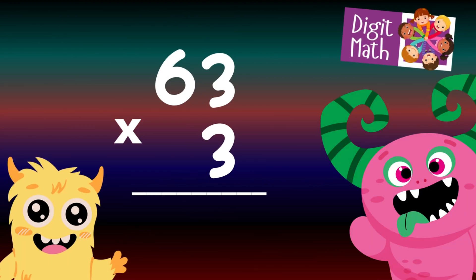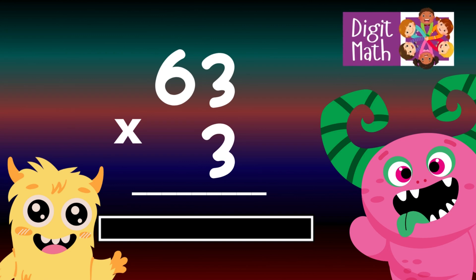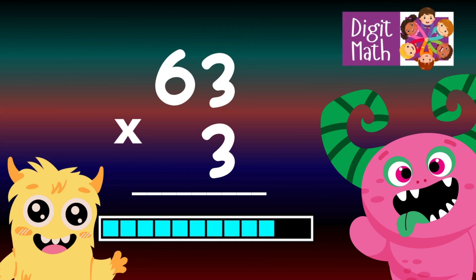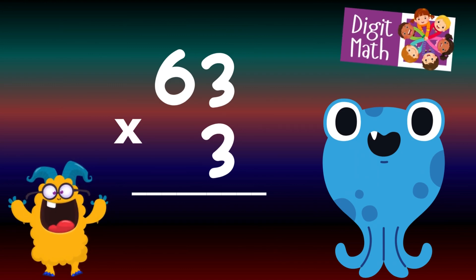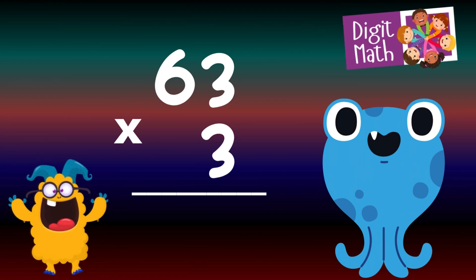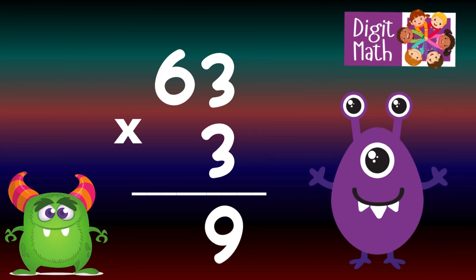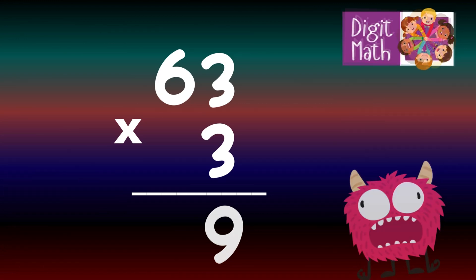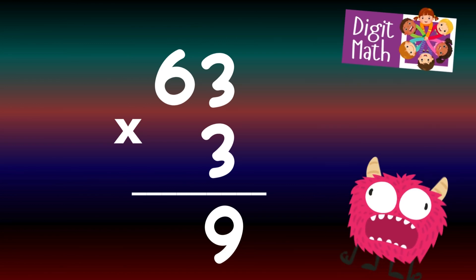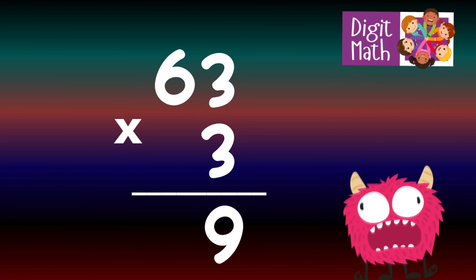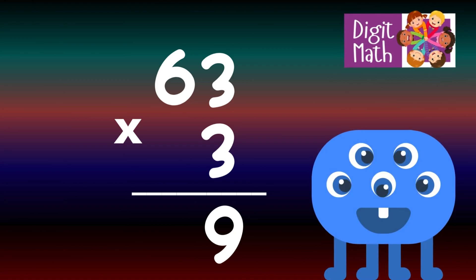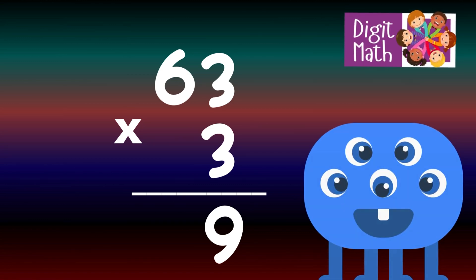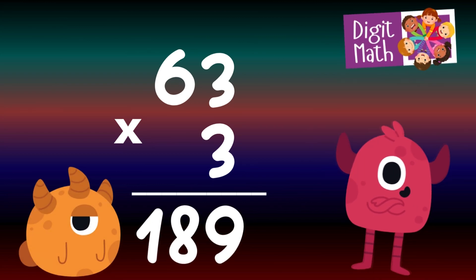63 times 3 — time to think. Let's go to the answer. To solve, multiply 63 by 3. In the Units column, multiply 3 by 3, which equals 9. Place 9 in the Units column. In the Tens column, multiply 3 by 6, which equals 18. Place 18 in the Tens and Hundreds column. So the final result is 63 times 3 equals 189.